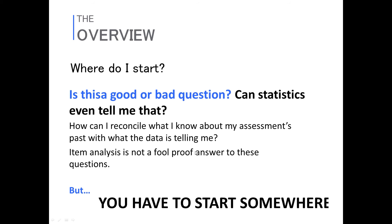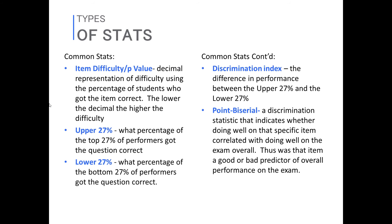So to start — some different types of stats. The most basic one is item difficulty and p-value. It is a decimal representation of difficulty — the percentage of students who got the item correct. The lower the decimal, the higher the difficulty, and vice versa. Very simply: 80% of the class got it right, or you might see it as 0.8 depending on the report. Some reports represent it as percentages, some as decimals. What percentage of people who took this assessment got this answer correct?